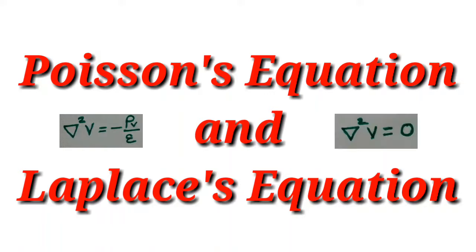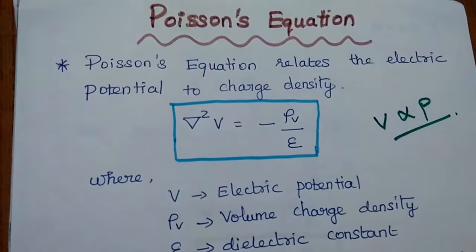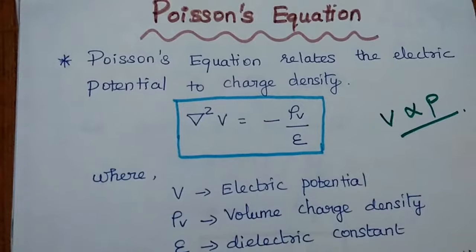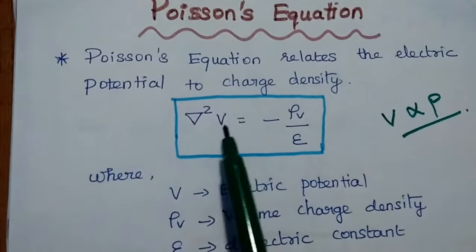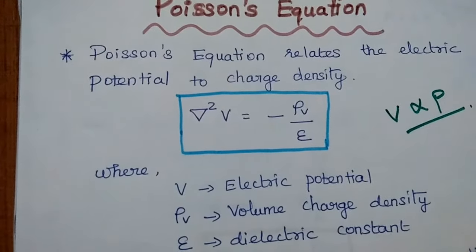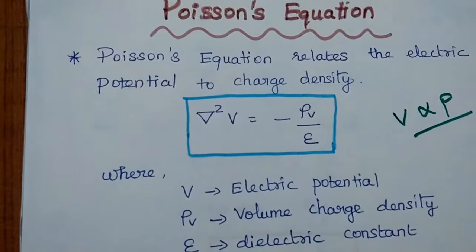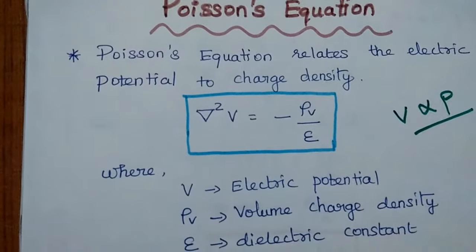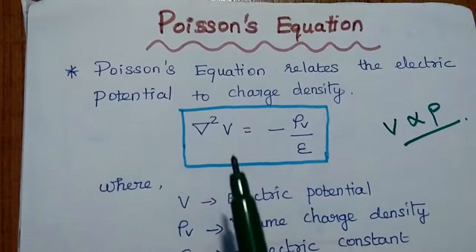Dear students, we are going to discuss Poisson's equation and Laplace equation. The scientist Poisson derived one equation which relates electric potential to charge density — the potential of a conductor is directly proportional to the charge it contains. This equation is called the Poisson equation.